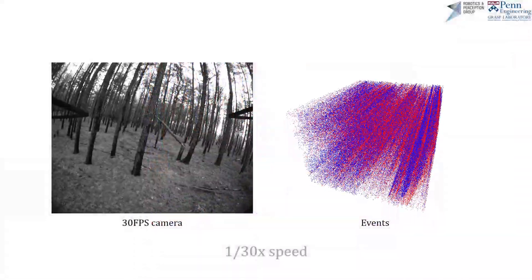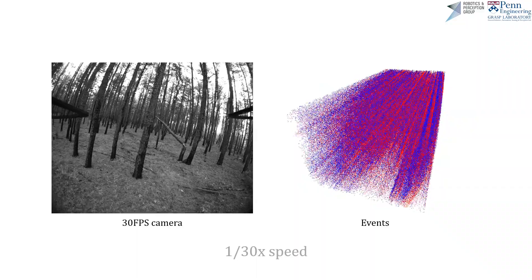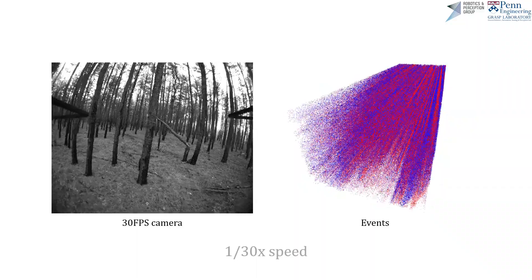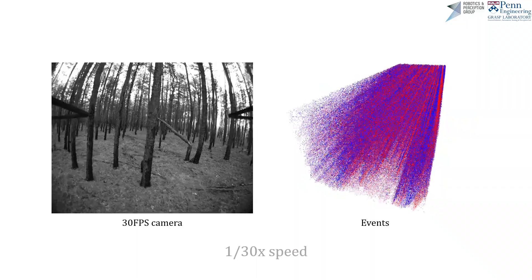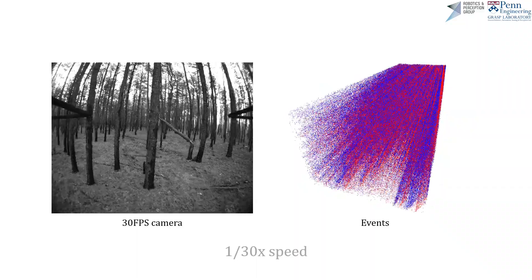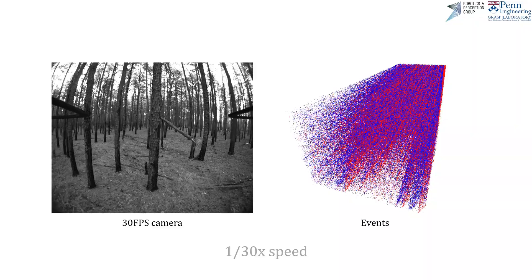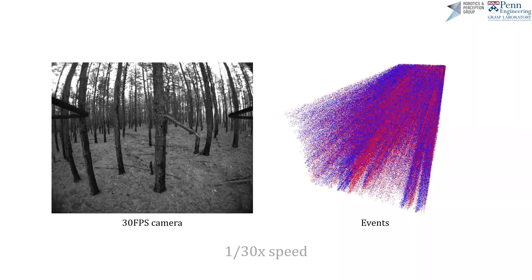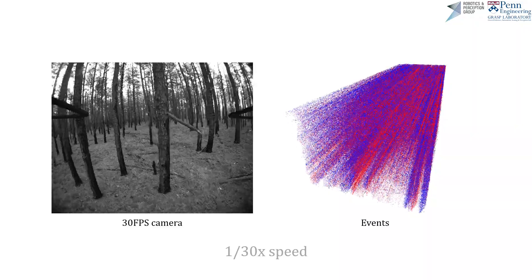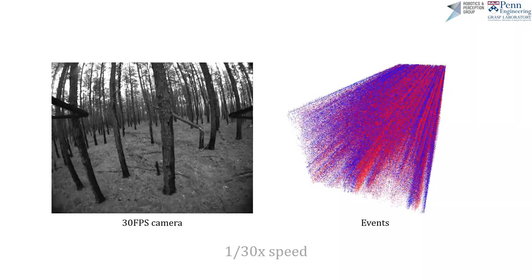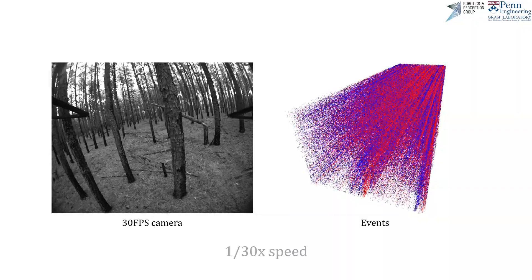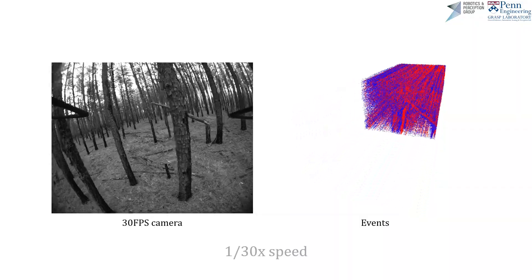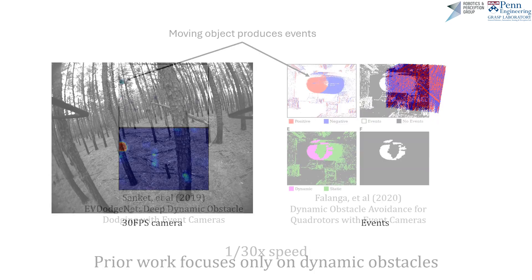While traditional cameras render frames of a scene at 30 or 60 Hz, an event camera is a near-continuous vision sensor conveying changes in appearance at each pixel. These events are triggered with microsecond latencies, with almost no motion blur and high dynamic range.